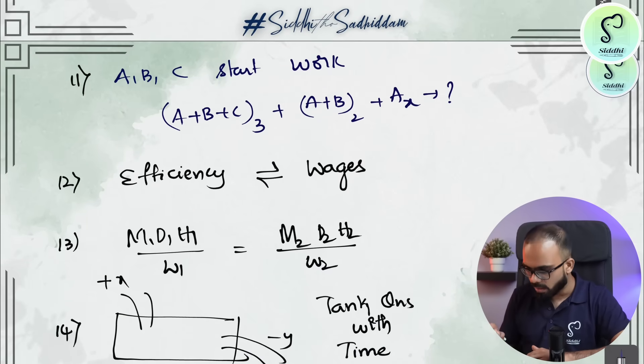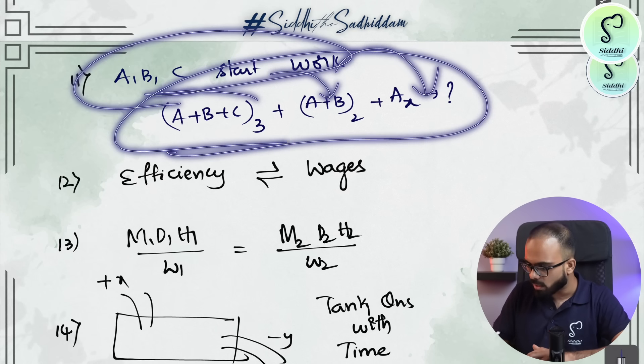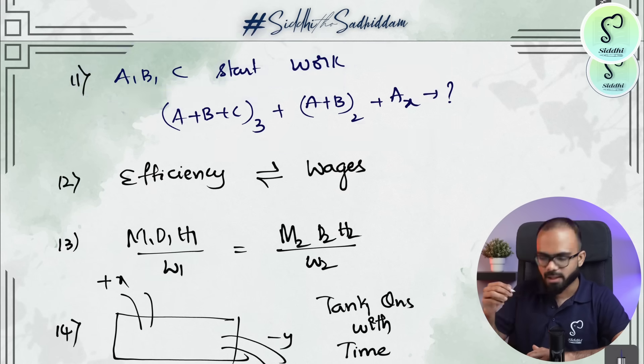Then in time and work, efficiency is extremely important there. If three people A, B, C start the work and C leaves in the middle, B leaves later, remaining work is completed by A, these kind of questions.